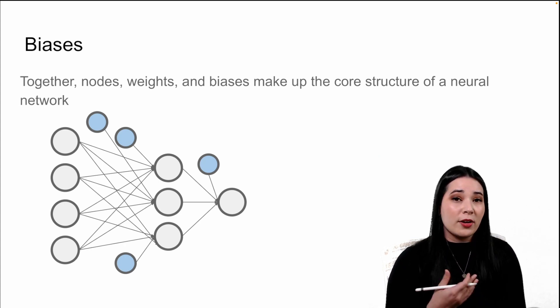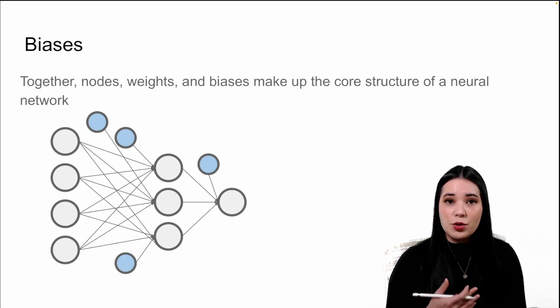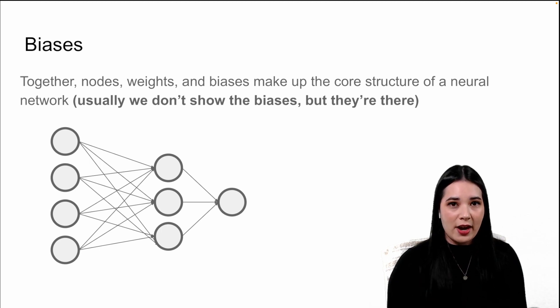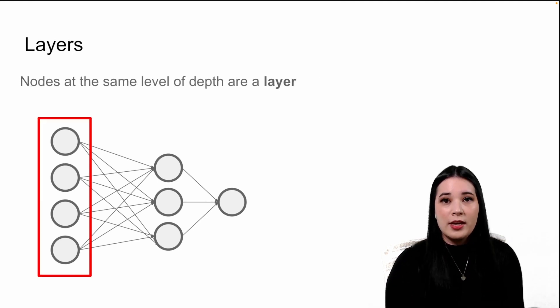Together, nodes, weights, and biases make up the core structure of a neural network. Here's a little bit more of a complicated example that has three layers of nodes with a lot of different weights and biases. Just a note, when we display a neural network, we typically don't show the biases, but they're always there.